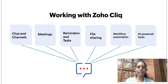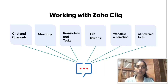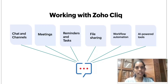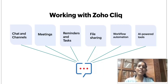ZohoCliq provides you with a lot of tools to make sure you are being productive. With the help of chats and channels, you can create focused discussions. You can get on instant meetings or schedule meetings to brainstorm, use whiteboards, and screen share with colleagues to arrive at conclusions. You can use reminders and tasks to track your project status, use file sharing to share and collaborate on files, bring data from external apps using workflow automation and extensions from the Zoho Marketplace, and leverage AI-powered tools to save time and maximize productivity.